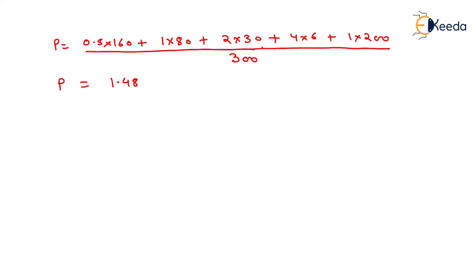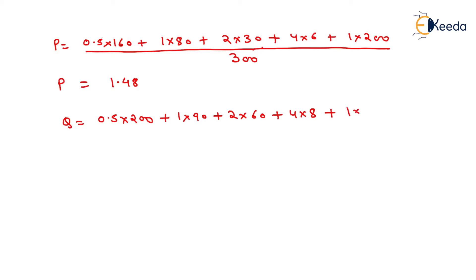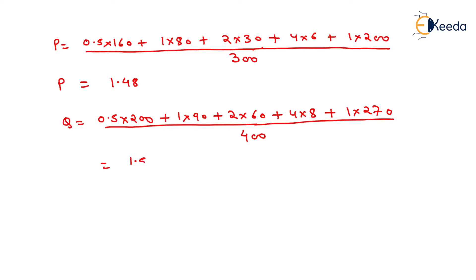Similarly, we can determine the utility value for road Q. It will be equal to: 0.5 × 200 + 1 × 90 + 2 × 60 + 4 × 8 + 1 × 270, divided by the length of road Q which is 400 km. After solving this, we get the utility value of road Q equal to 1.53.